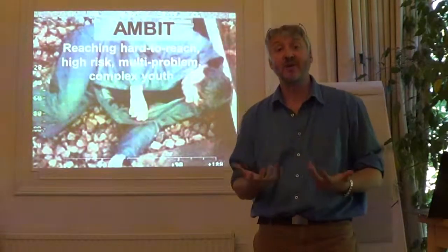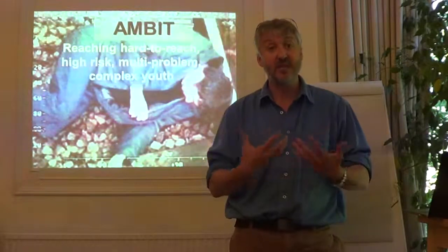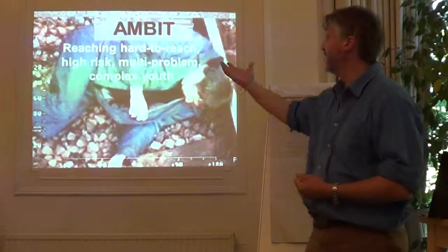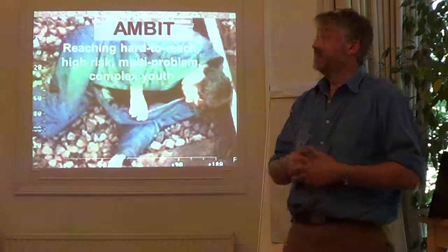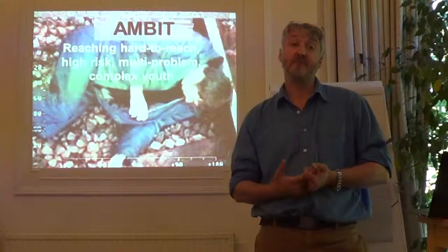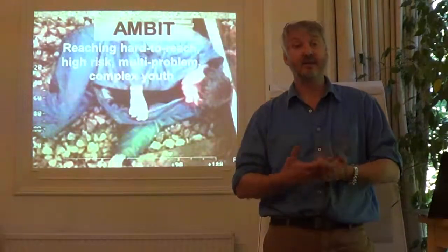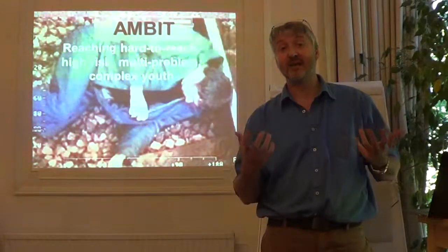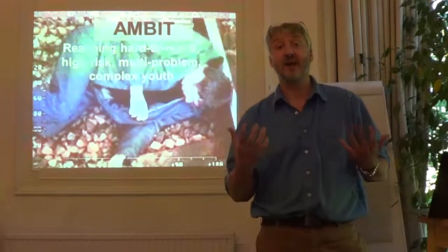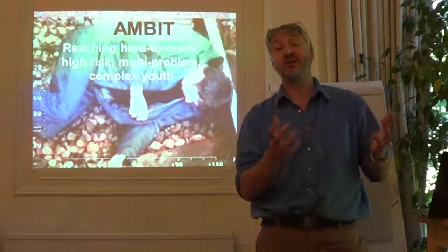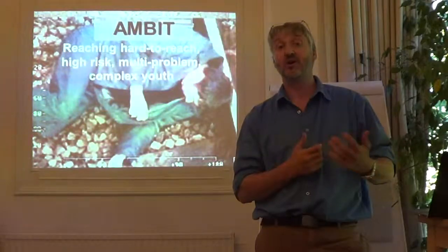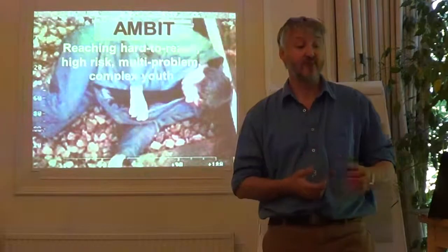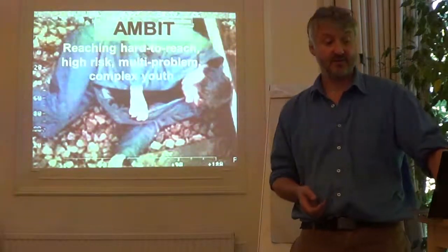What we have in common is that the young people AMBIT was originally designed for are young people who may find it hard to engage — they're hard to reach. They carry multiple risks and often have more than one problem which interacts. Their complexity is partly to do with the mixture of family, social, and psychological problems that are going on, but also they tend to attract very complex networks of carers.